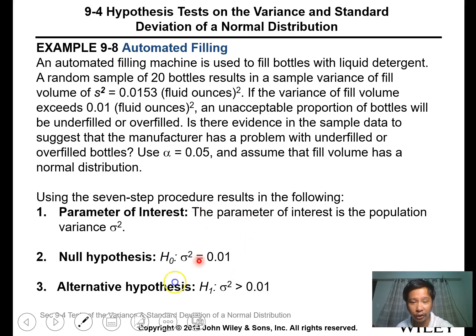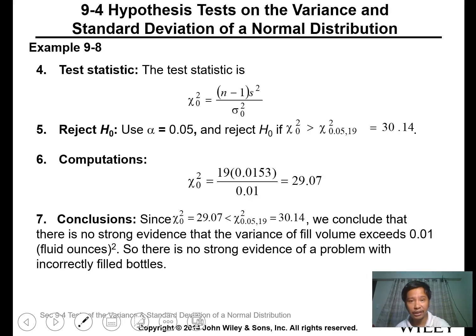Parameter of interest: the variance of the population. Null hypothesis equals 0.01. Alternative is greater than 0.01, indicating overfill or underfill. Test statistic is the chi-square value. Using this formula, we will reject if the null hypothesis chi-square is greater than 30.59. You can check the chi-table for this critical value. Then we proceed with the calculation.